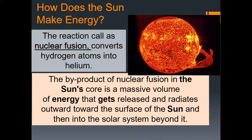How do these suns make energy? We now know more details about stars and how they make their energy. The reaction we call nuclear fusion converts hydrogen atoms into helium. In that process, these stars make energy. The byproduct of nuclear fusion in the sun's core is a massive volume of energy that gets released and radiates outward toward the surface of the sun, then spreads into the solar system and beyond.